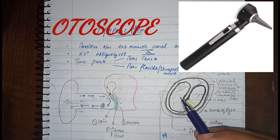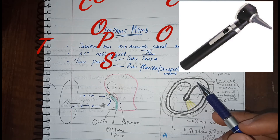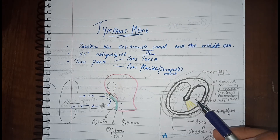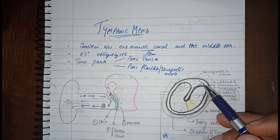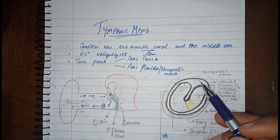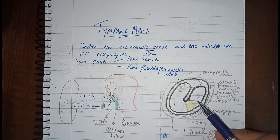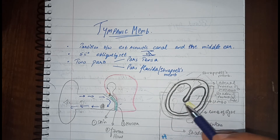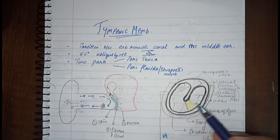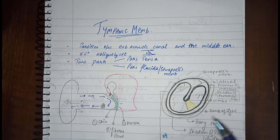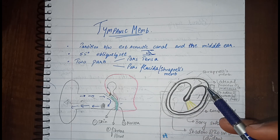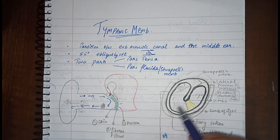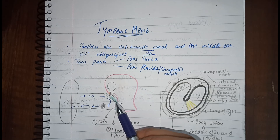If we throw a strong light with the help of an otoscope, we can see different parts of the tympanic membrane. The upper part is the pars flaccida and the lower part is the pars tensa. Pars flaccida is called flaccida because, as the name suggests, it is quite loose, and pars tensa is called tensa because it is quite tense.